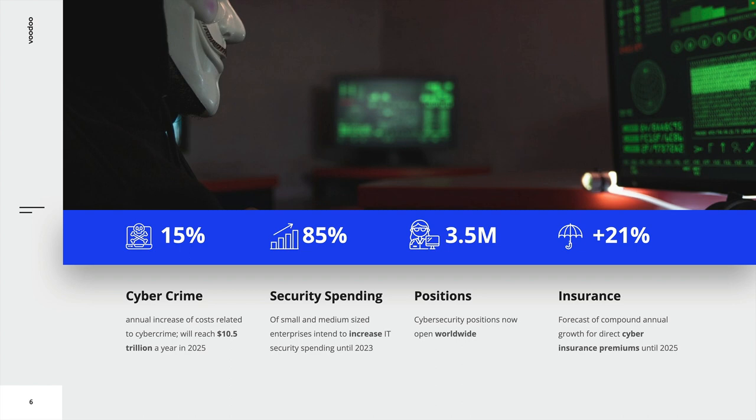Nowadays, information is exposed to various threats that have the ability to disrupt critical business functions of an organization. We will get into more detail on current threats later on in this course. On this slide, you can see the results of a survey on the future of cyber information security conducted by McKinsey in 2022. According to their research, the costs related to cybercrime are going to increase by 15% on an annual basis and reach $10.5 trillion a year in 2025.